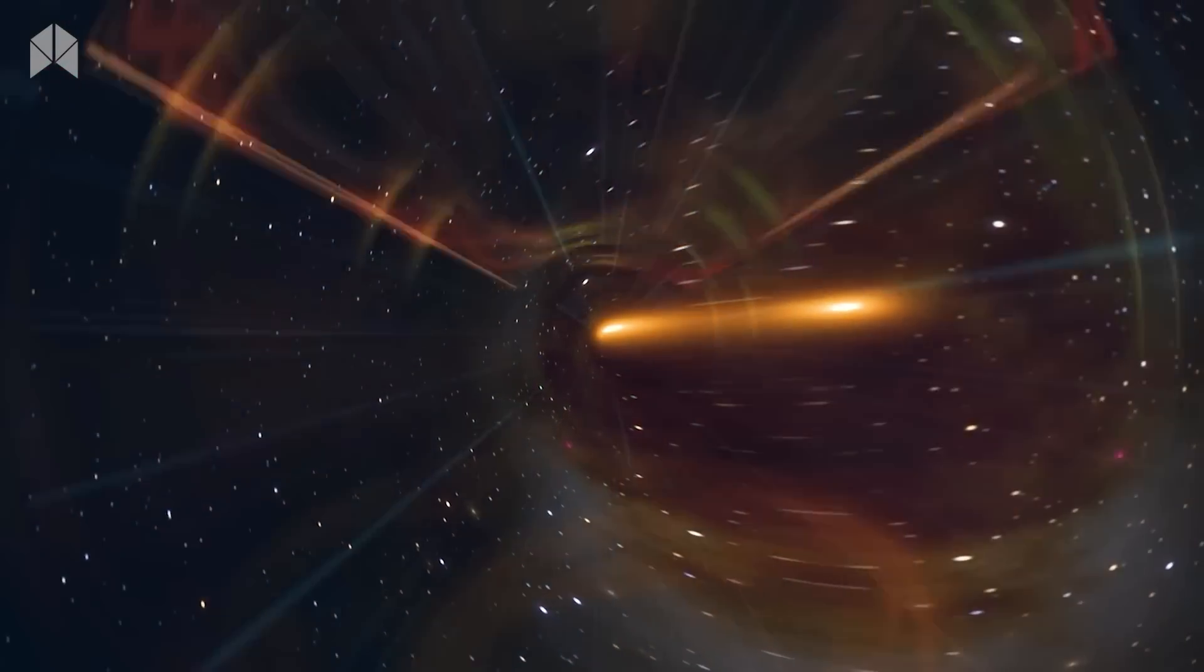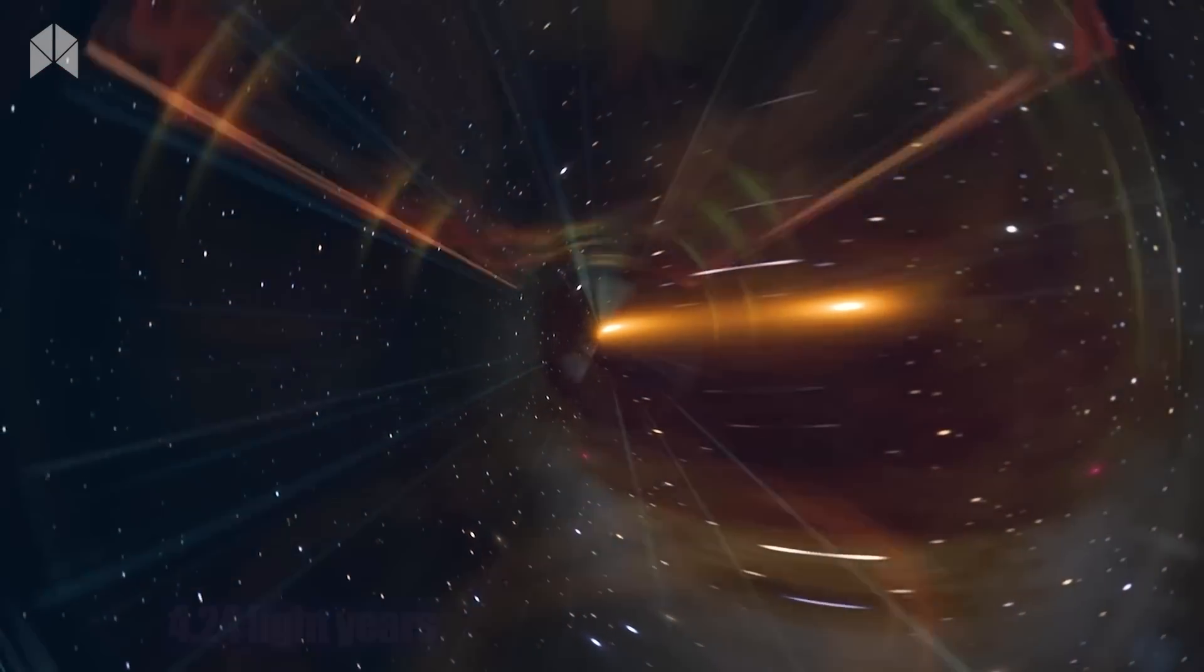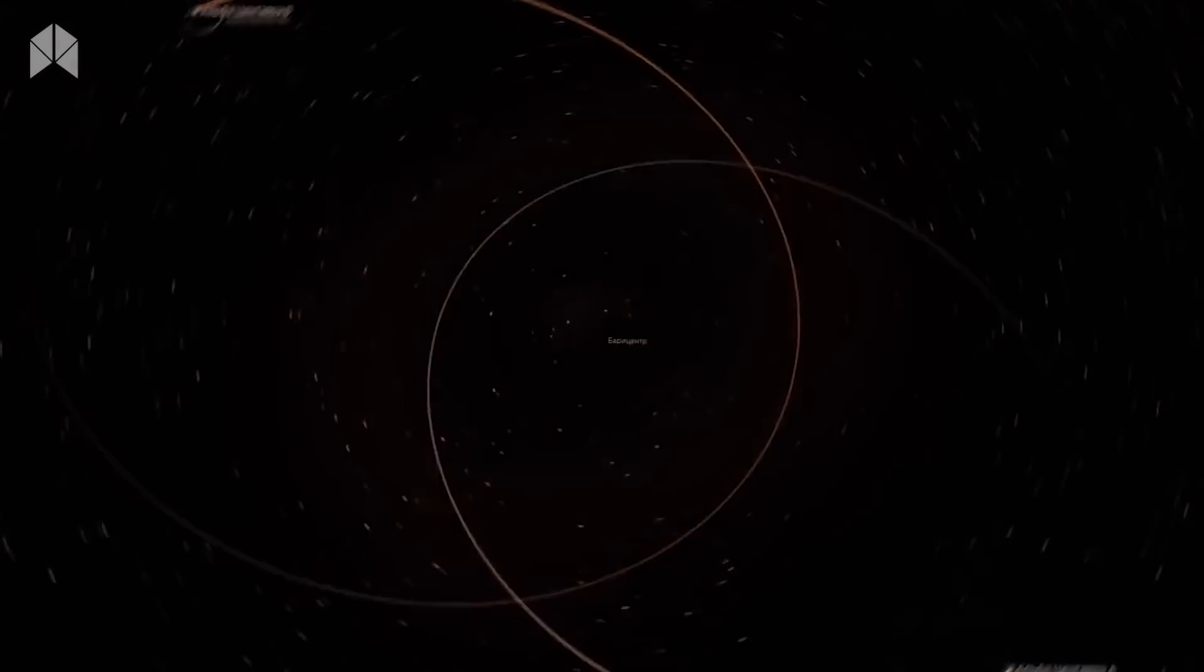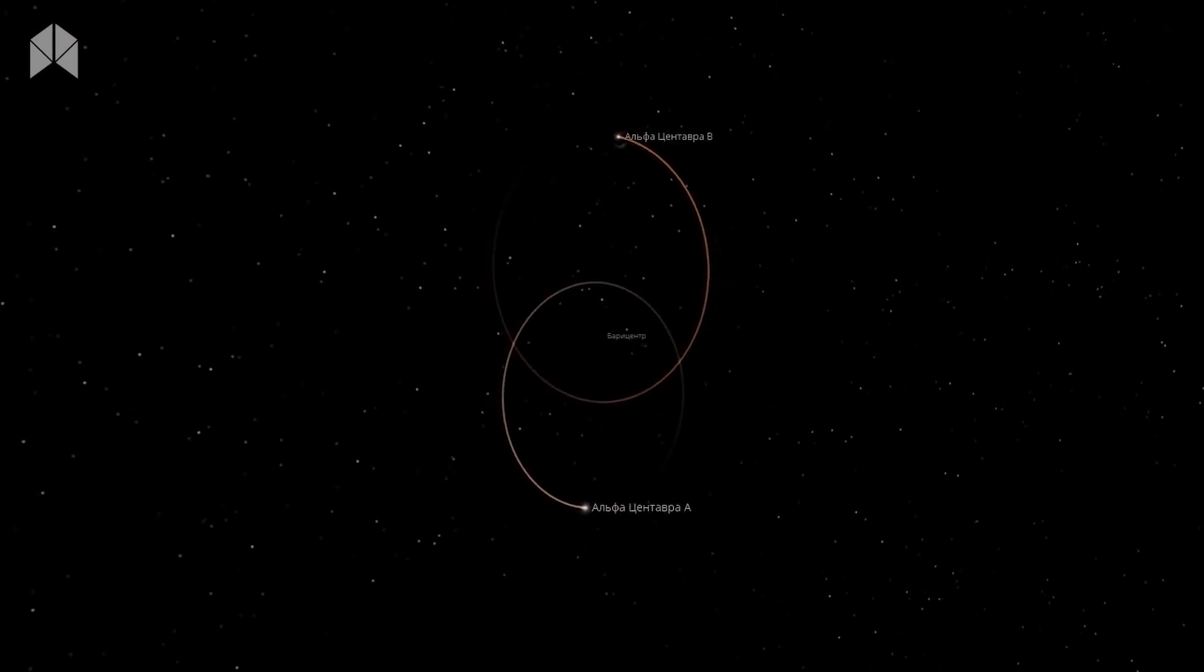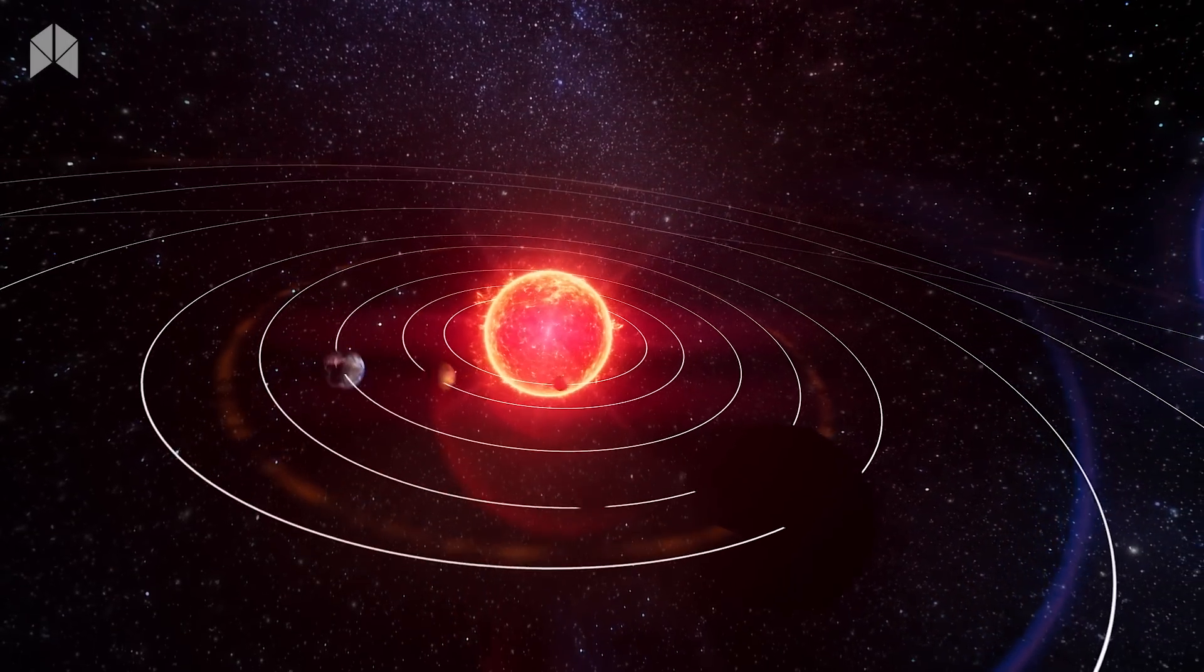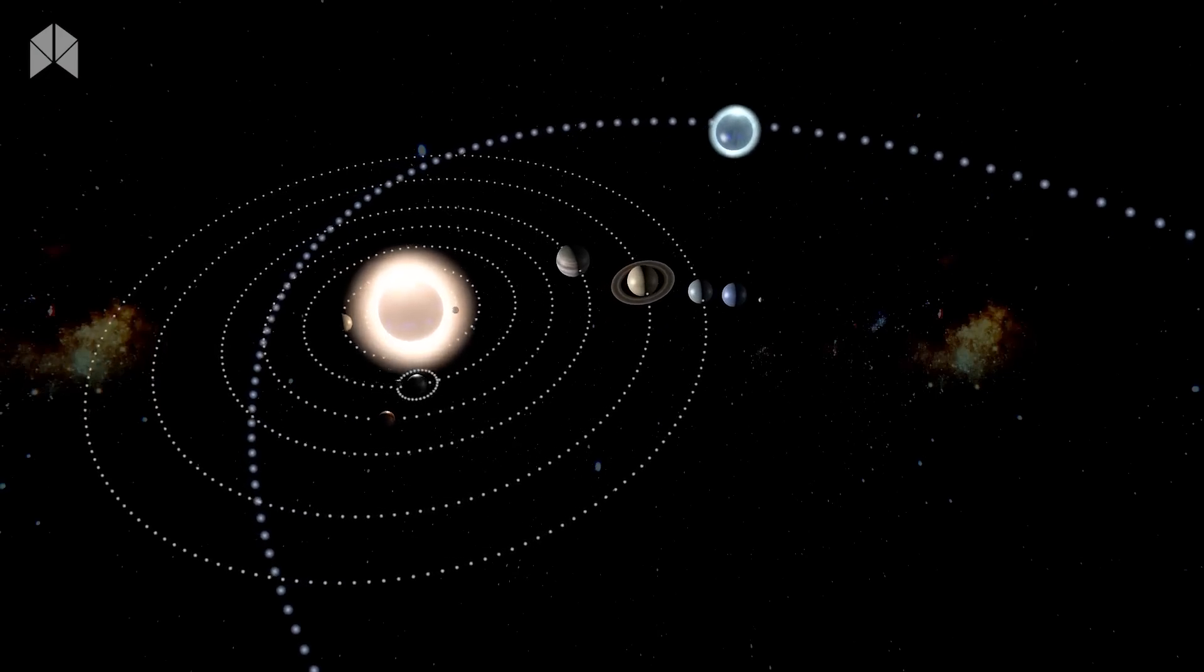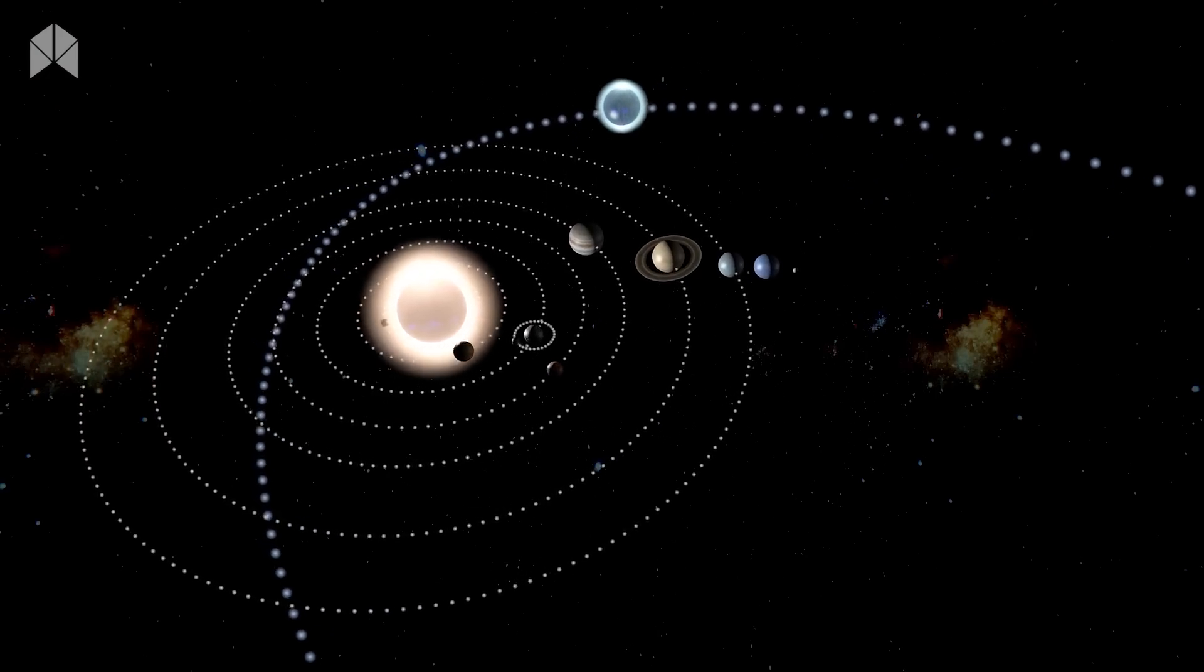Proxima b, one of the exoplanets nearest to Earth, is 4.24 light-years distant from us. It revolves around Proxima Centauri, which researchers say is our solar system's neighboring star. The 2016 finding of Proxima b shows that the planet is in the star's habitable zone.